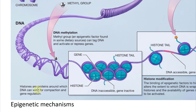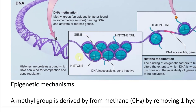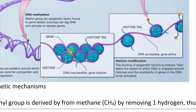Histones are proteins around which DNA can wind for compaction and gene regulation. For example, if you have a histone spool where the DNA in between two spools is inaccessible, the gene is inactive. But when you modify this histone — through histone modification — the binding of epigenetic factors to histone tails changes gene accessibility.